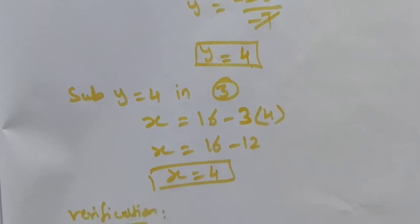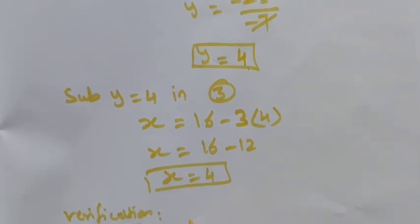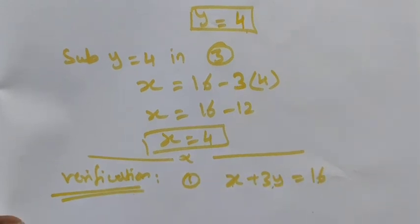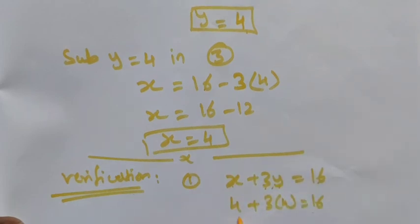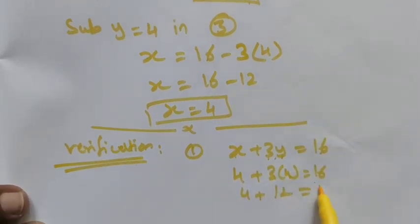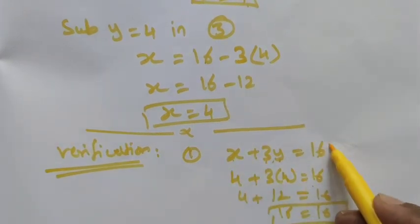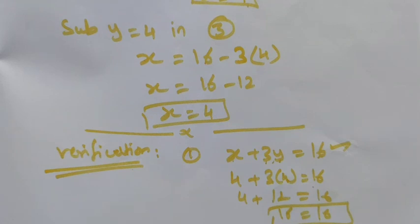Now let's do the verification. We can take either the first or second equation. Taking equation one: x plus 3y is equal to 16. Apply the values: 4 plus 3 times 4 equals 4 plus 12, which equals 16. So 16 is equal to 16. Since the left-hand side equals the right-hand side, our answer is correct. Thank you, students.